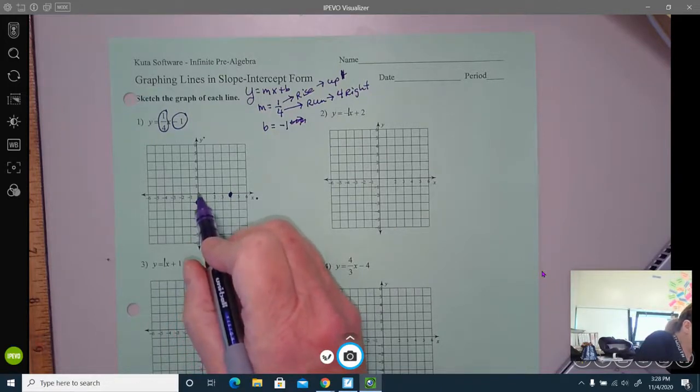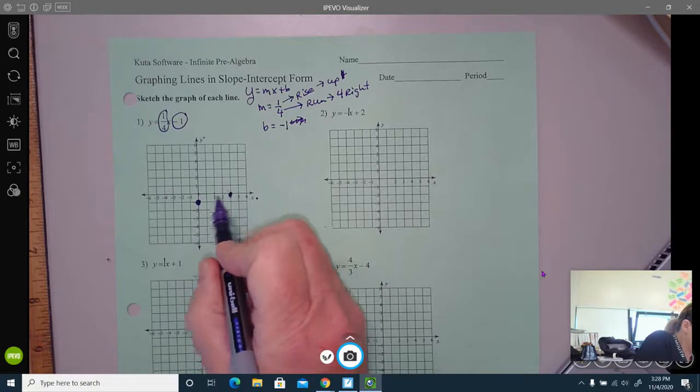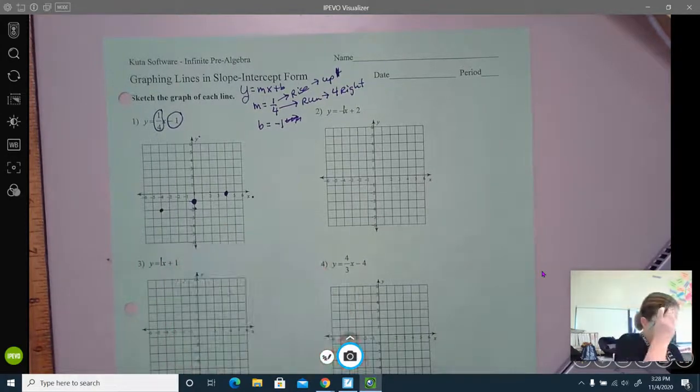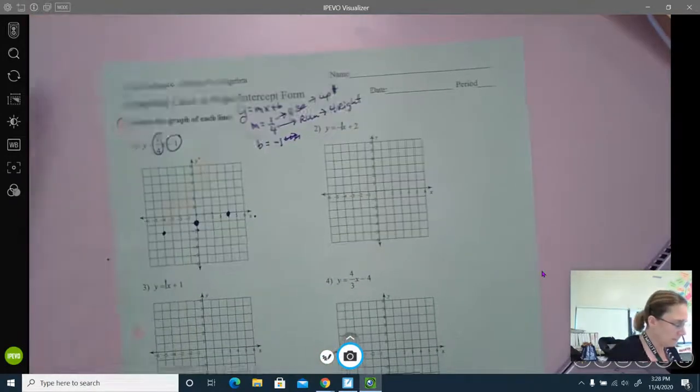four to the right. So I'm going to go down one, four to the left, and make a point there. I haven't changed the slope. I have just kept a constant rate of change.